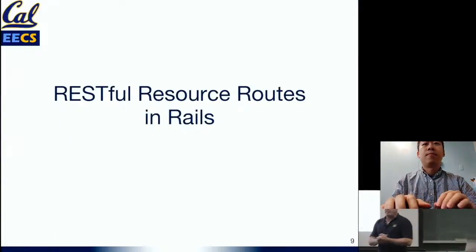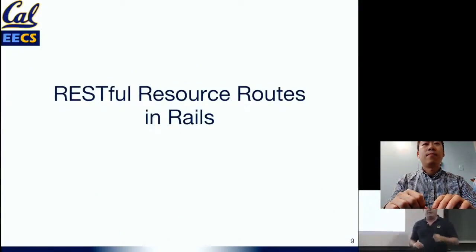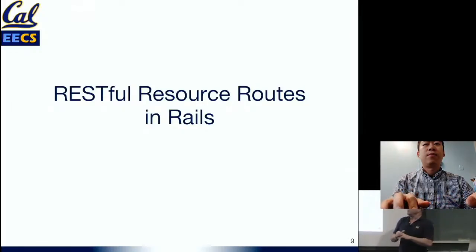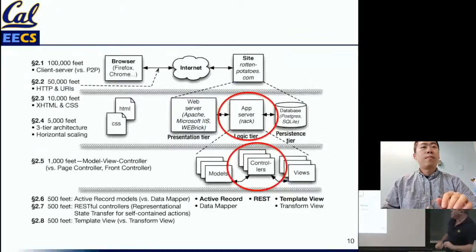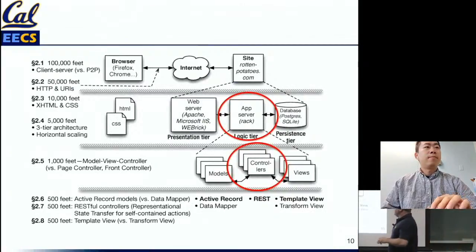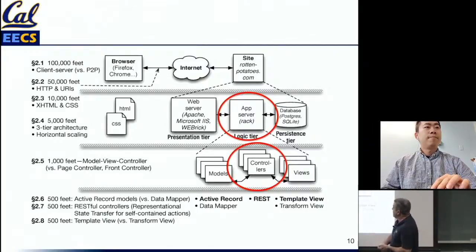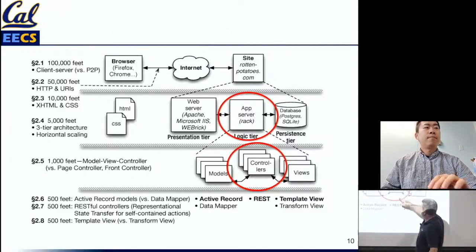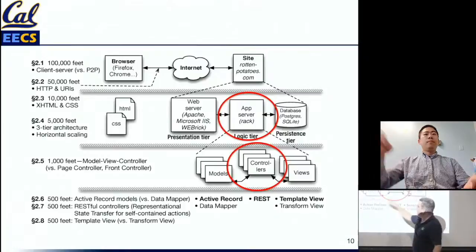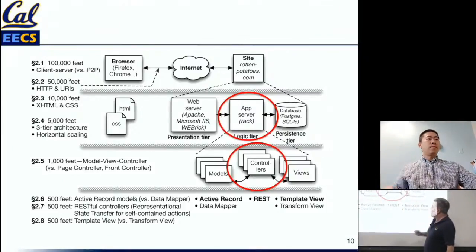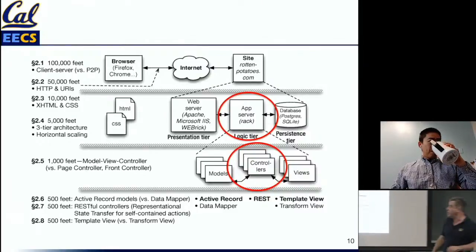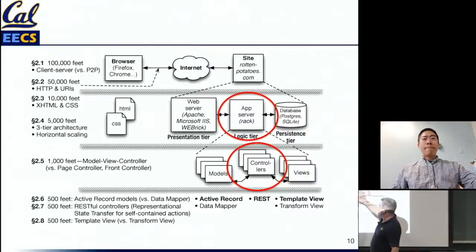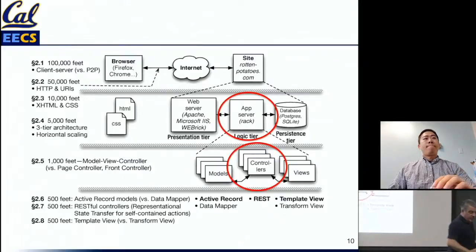Our first stop is to talk in more detail about RESTful routes. In Rails we've kept pointing at this file called routes.rb — what's going on there? As a reminder, from our 10,000-foot view, we've gone from the app server down to the level of models, views, and controllers. We're going to talk about routes, which are most closely associated with controllers. Our second stop will be models and the database.